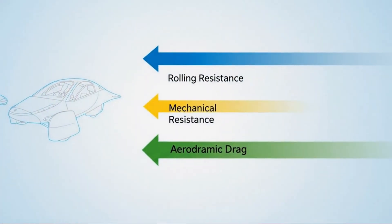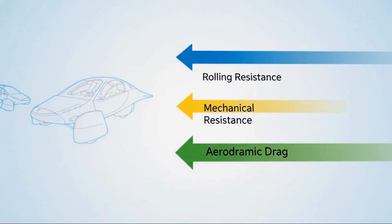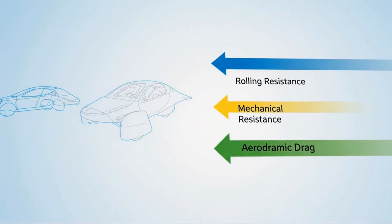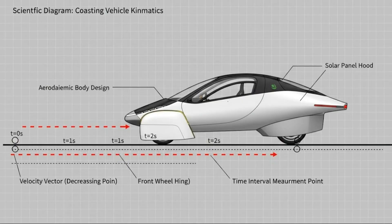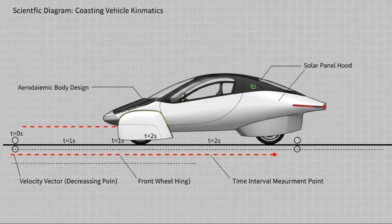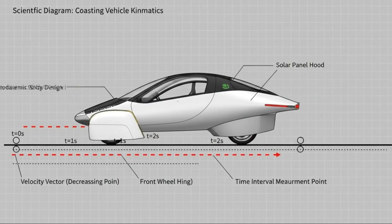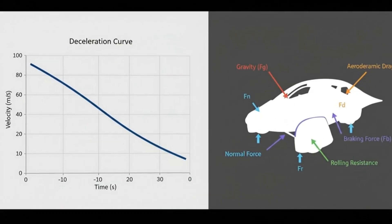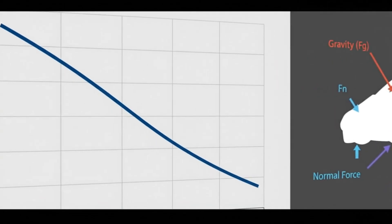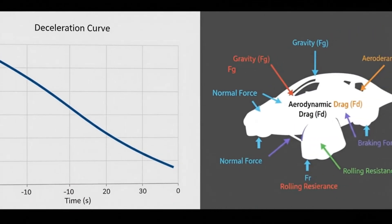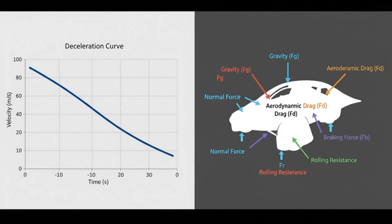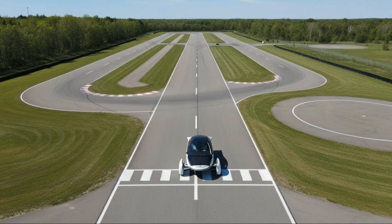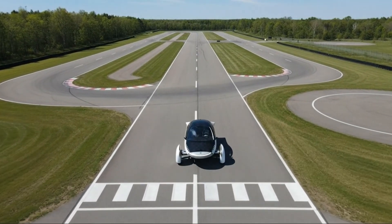Yet that's exactly what Aptera is claiming with its solar electric vehicle. And the most astonishing part isn't the claim itself, it's the data backing it up. During real-world coast-down testing in the Mojave Desert, the vehicle rolled for more than three minutes after hitting 60 miles per hour, covering nearly two miles before coming to a complete stop. That kind of efficiency doesn't just raise eyebrows, it forces a complete rethink of what's possible in automotive design.